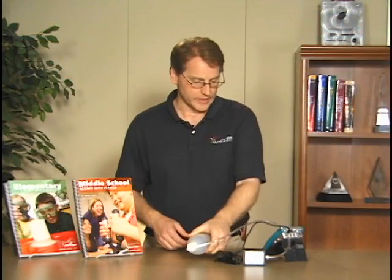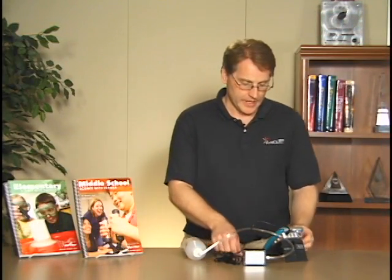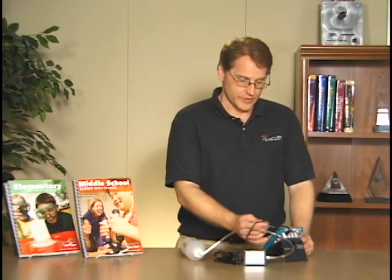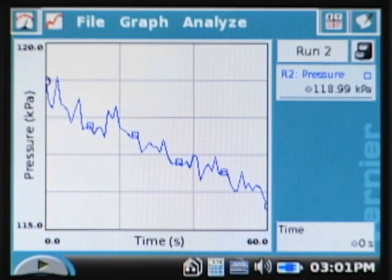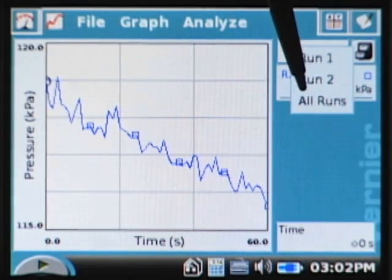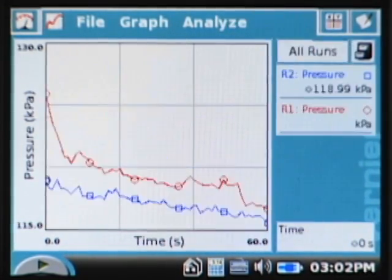Okay, so there's my second run. Now it would be nice to be able to see both runs together so that I can compare the values there. We can do that very easily by tapping here. You'll notice it says run two, and if I tap there it says run one, run two, or all runs. I will tap all runs, and then we see the two graphs displayed together—the red being my right hand and the blue my left.